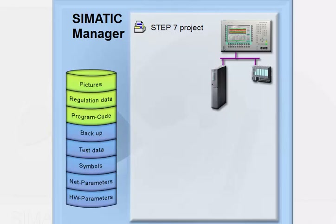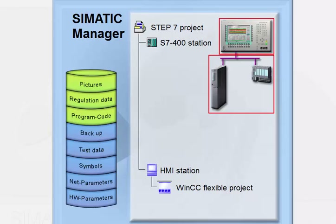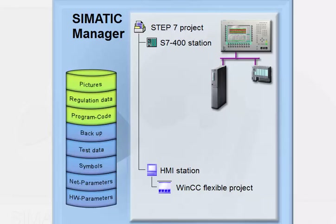A project comprises mainly the following hierarchically structured objects: one or more stations containing all the data of a controller. This includes, on the one hand, the configuration data with the station's hardware structure and the parameters of the modules used, and on the other hand, all user program data contained in the CPU object.